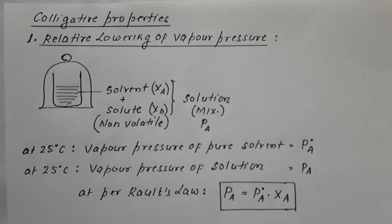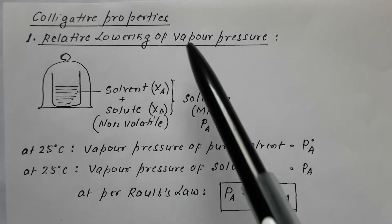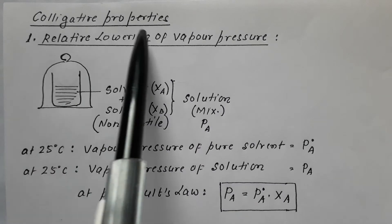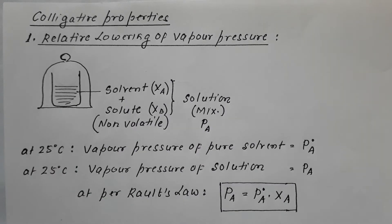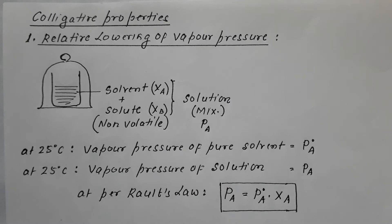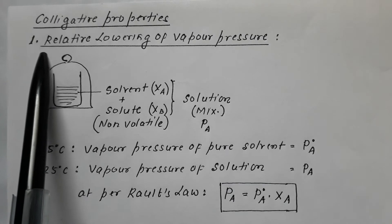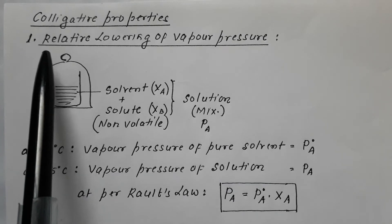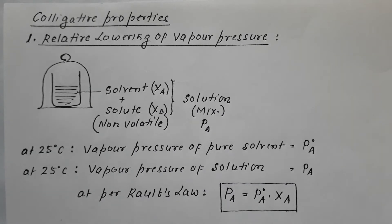Hello dear students, welcome to Chemistry Fundamentals. We are dealing with colligative properties. Colligative properties are those properties which depend upon the number of particles and change with a change in number of particles. The four such properties are: relative lowering of vapor pressure, elevation of boiling point, depression of freezing point, and osmosis and osmotic pressure.